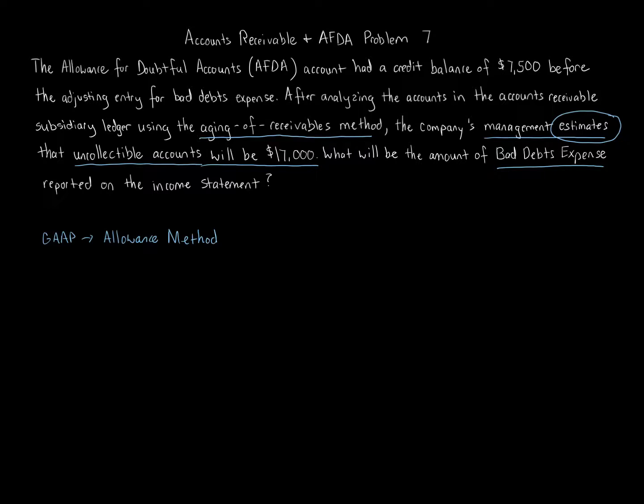Now when it comes to the Aging of Accounts Receivable method, which is the method we're using here, the Aging of Accounts Receivable method uses the balance in AFDA, in Allowance for Doubtful Accounts, to determine what the actual adjustment is when it comes to bad debt expense for the year. Now the percent of net sales, percent of net credit sales estimation, we ignore AFDA. When we're talking about the Aging of Receivables method, we do not ignore. When we're doing the Aging of Receivables method for estimating bad debt expense, we use the AFDA balance. So we need to know that.